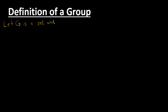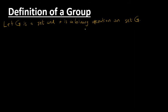Let G be a set and let star be a binary operation on set G. If star is a binary operation — I think you already know from my previous video — then for every element in G, G is closed under this operation.